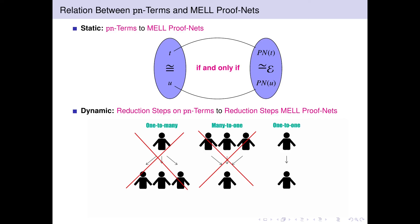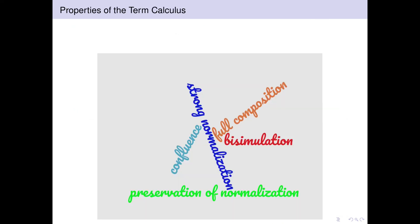Most of the paper is devoted to show the good properties of the language, such as confluence, preservation of normalization, strong normalization, full composition, and simulation.